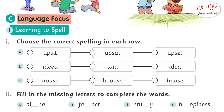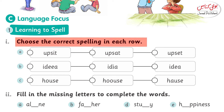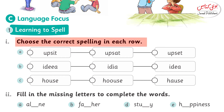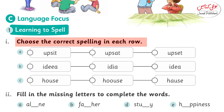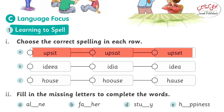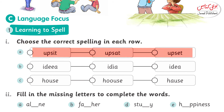Language Focus — Learning to spell. Choose the correct spellings in each row. Yahaan pe aapke paas kuch spellings di gayi hain jo isi chapter se li gayi hain. Chapter mein in alfaaz ko, yani ke in words ko dhoondiye aur inke sahih spellings bataiye. Jaisi ke yahaan pe pehla word hai: upset, upset, and upset. So kaunsa word sahih hai?